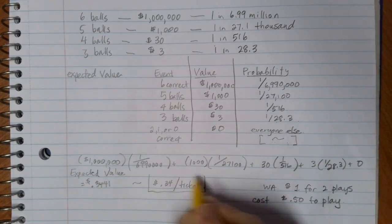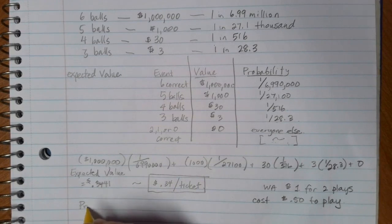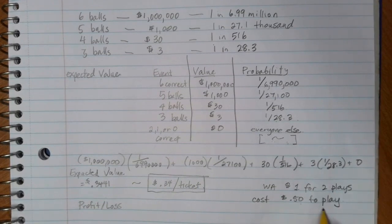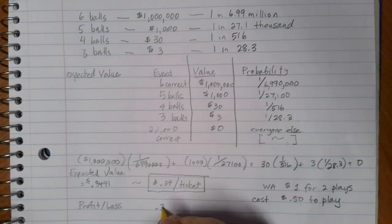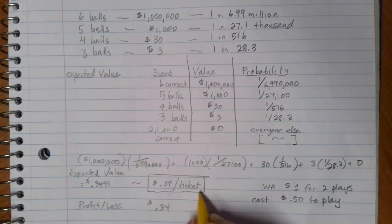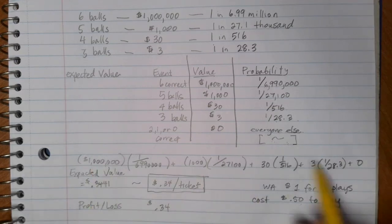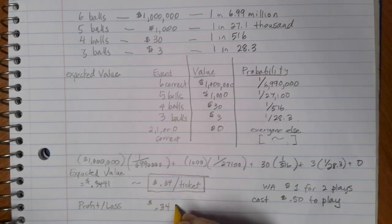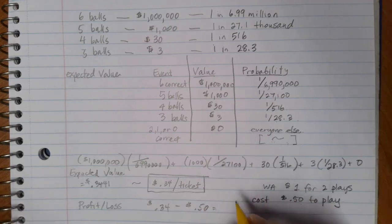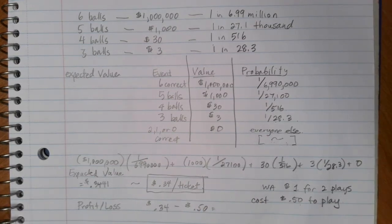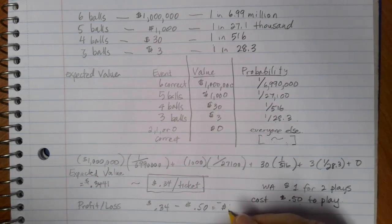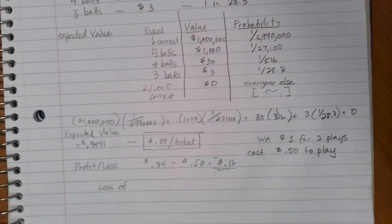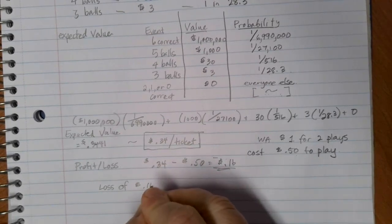So this is the expected value of a win, but if you want to figure out a profit or a loss, then we have to take into consideration the fact that we had to buy that ticket in the first place. So even though I would expect to win an average of 34 cents over the long haul, we had to pay the 50 cents to play in the first place, so in this case we'd end up with a loss of 16 cents. We get negative 16, so we'd have a loss of 16 cents to play.